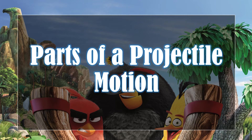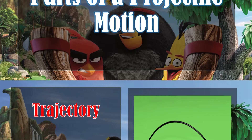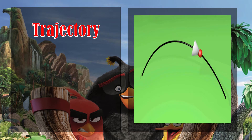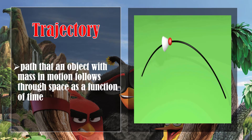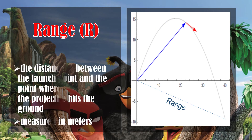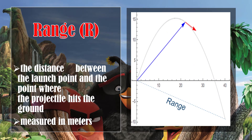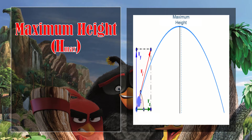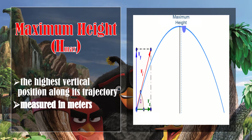Let's have the parts of a projectile motion. First is trajectory — it is a path that an object with mass in motion follows through space as a function of time. Second is range, the distance between the launch point and the point where the projectile hits the ground, measured in meters. Third, we have the maximum height — the highest vertical position along its trajectory, also measured in meters.